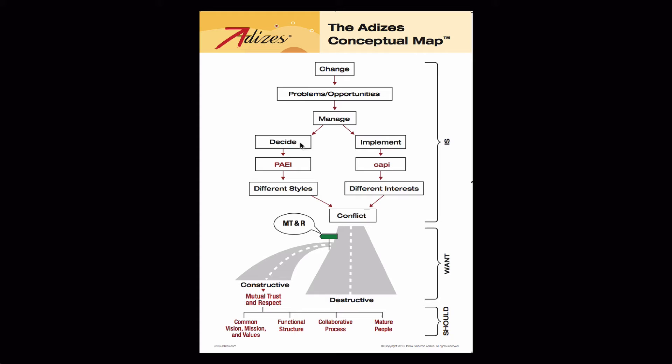Other conflicts that exist in management include the conflict over what is a good decision. Different people have different interpretations of what really makes for a best decision — they have different interpretations because they have different strengths and necessarily they have different styles. And by the way, we want this. If two people think the same, one is unnecessary. We want different styles in order to make good decisions. But people with different styles have conflicts. We all know about these kinds of personal conflicts.